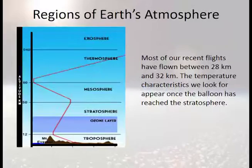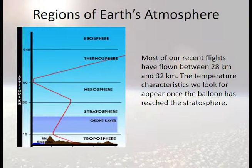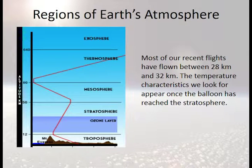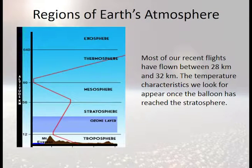Just a bit of a review — we all kind of know this. The profile of the atmosphere, the daytime profile: the troposphere, then the tropopause where temperature levels off. The red line is representative of that, and then temperature starts to increase again once you hit the stratosphere. Most of our recent flights have flown between 28 and 32 kilometers, and we're looking for the temperature characteristics in the stratosphere.